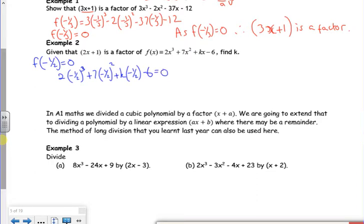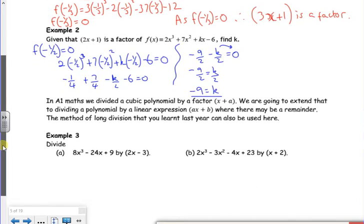Right, let's have a look at this first term then. So minus a half cubed is minus an eighth times by 2 is minus a quarter. The next one's going to be a plus seven over four. Then minus k over 2 minus 6 is zero. If I add all those together, it gives me minus nine over two. So minus nine over two minus k over two is equal to zero. If I take that over, minus nine over two is k over two. So k must be minus nine.